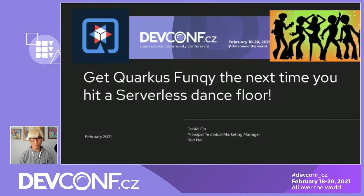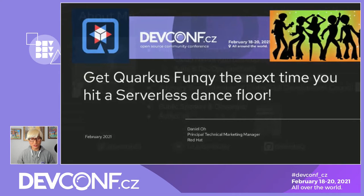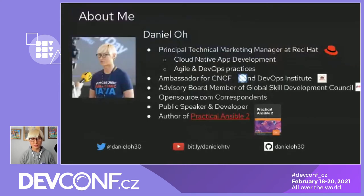My name is Daniel Oh. I'm working for Red Hat as a technical marketing manager, specialized in cloud-native application development. I also try to provide more practical guidance for enterprise developers and IT operations teams with Azure and DevOps. I am a CNCF ambassador and a DevOps Institute ambassador as well.